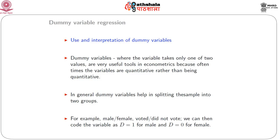What are the use and interpretation of dummy variables? Dummy variables — where the variable takes only one of two values — are very useful in econometrics because often the variables are quantitative rather than qualitative. In general, dummy variables help in splitting the sample into two groups, for example, male and female, or those who voted and those who did not.